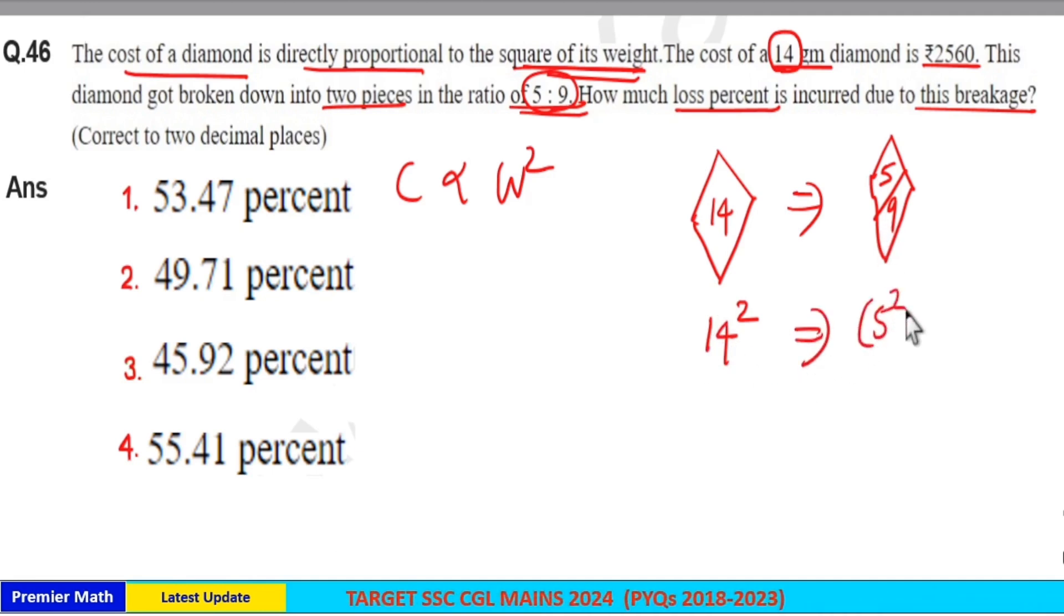14 square is equal to 196, and 5 square plus 9 square is equal to 25 plus 81, which is 106. So loss is equal to difference between initial cost and final cost, which is 90.